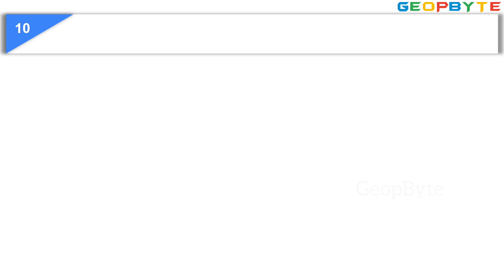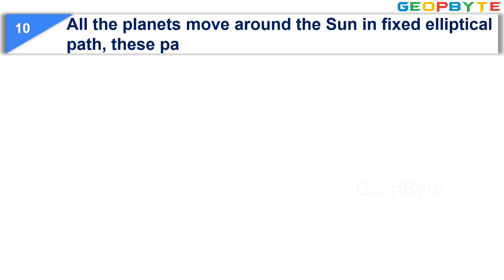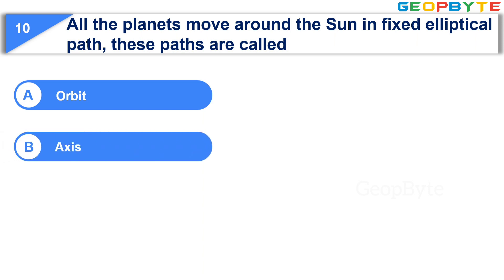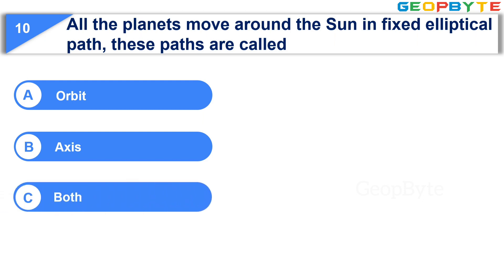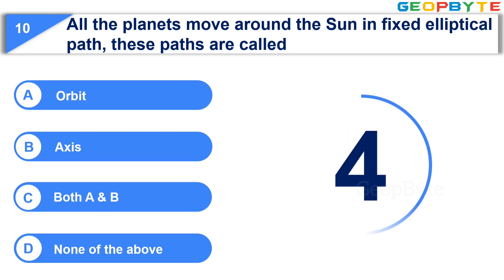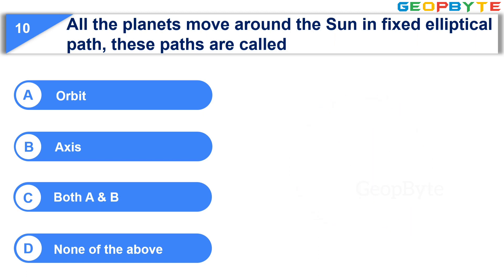The next question is: All the planets move around the sun in fixed elliptical paths. These paths are called — Option A: Orbit. Option B: Axis. Option C: Both A and B. Option D: None of the above. Your time starts now. Your time is up and the correct answer is Option A: Orbit.